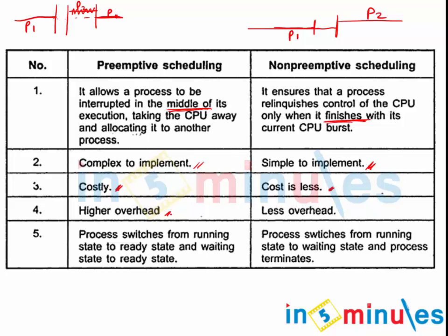Preemptive scheduling has higher overhead, meaning all the data must be stored, a context switch is performed, and then control is returned — whereas non-preemptive has much lesser overhead since you simply take the data, process it, and move to the next process. In preemptive, a process can switch from running to ready state and from waiting to ready state, whereas in non-preemptive, a process switches from running to waiting state or terminates.